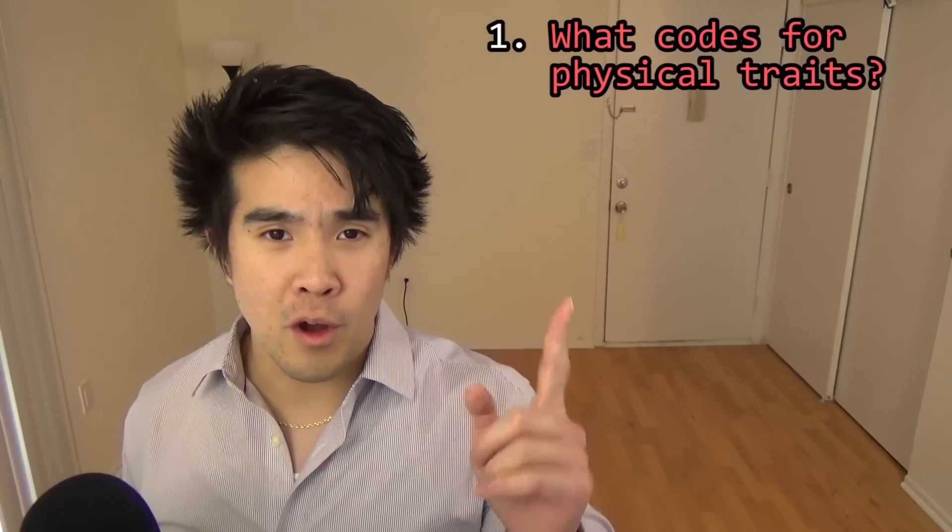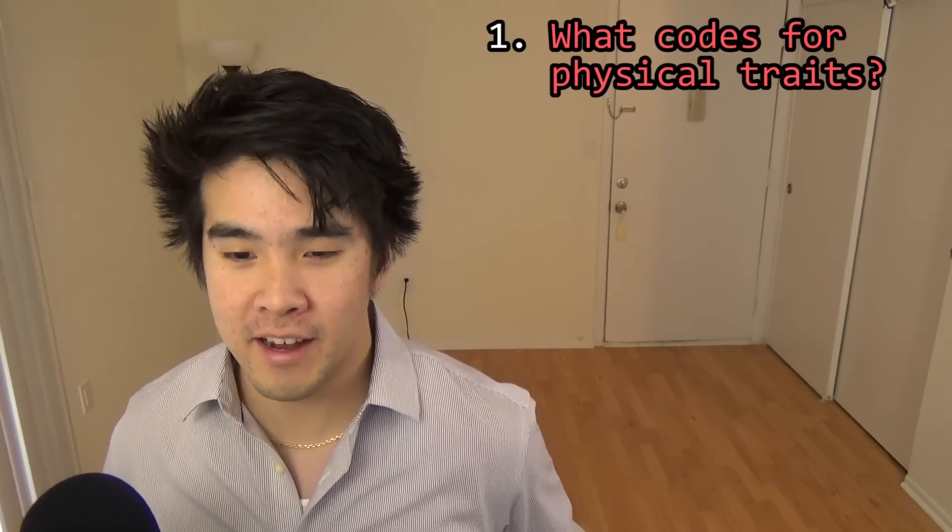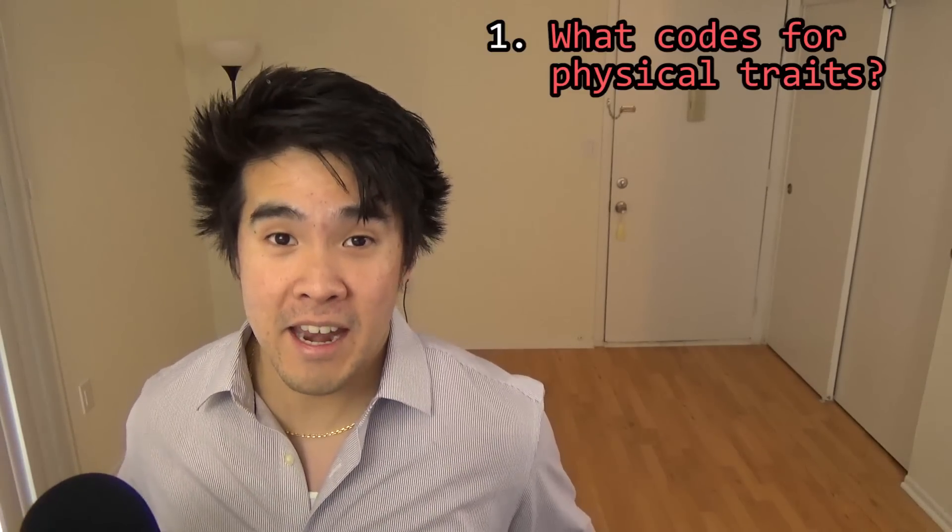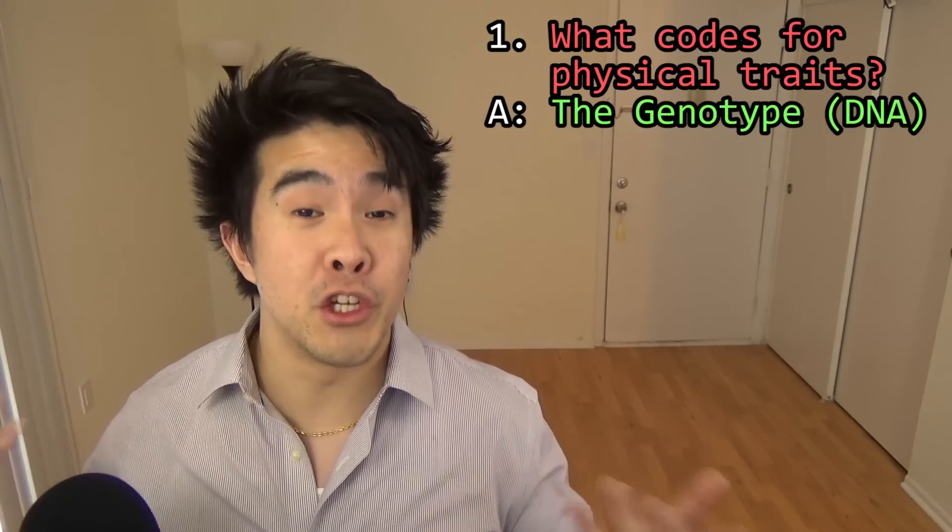But when we think about this concept, it automatically brings in a series of questions. The first question is, what underlying architecture results in these physical features? In the case of living things, we know that it's DNA. And we call this the genotype.